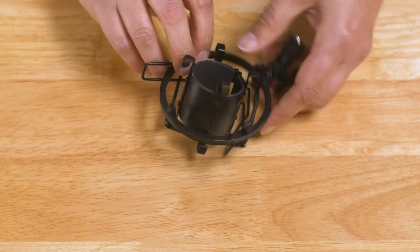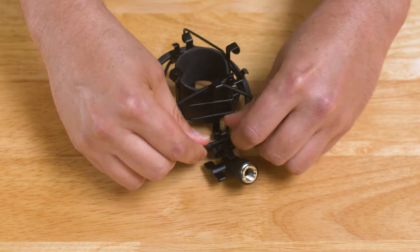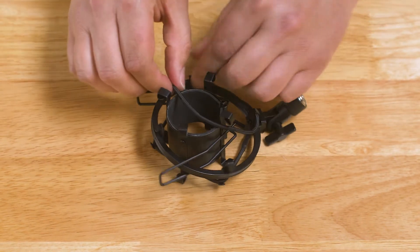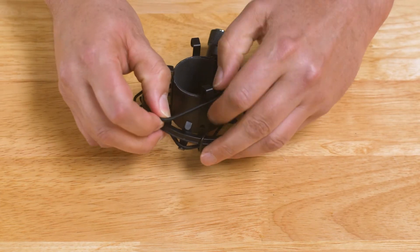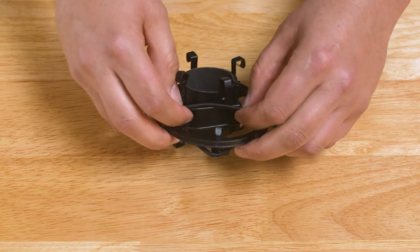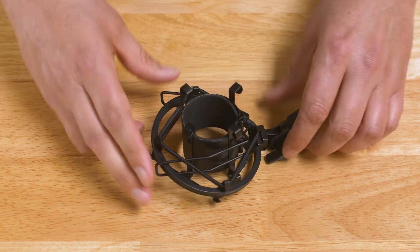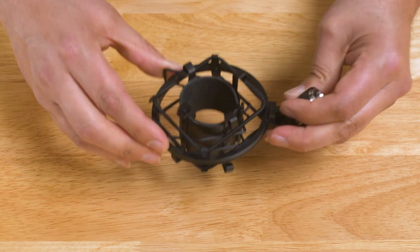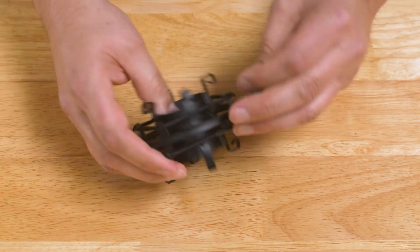And then I flip it over and do the other side. Now that I've got it around my outer cage, now I just start hooking it to the inner clips, which you can see here.